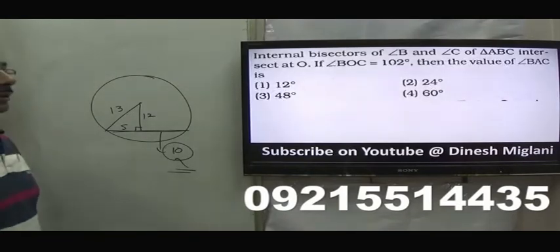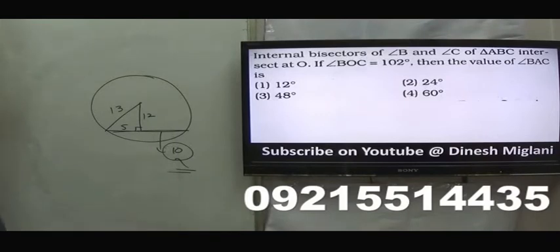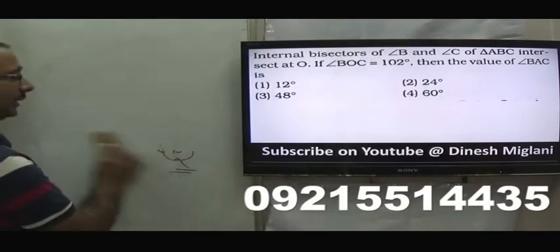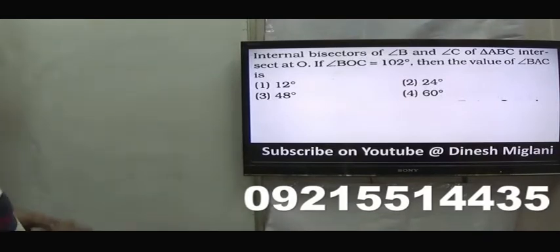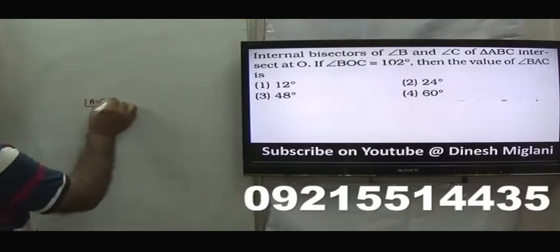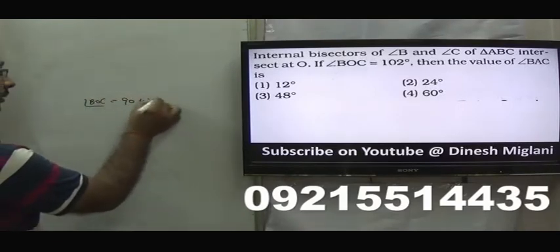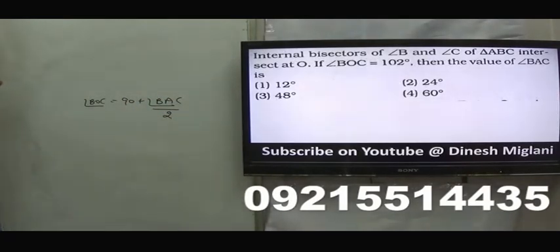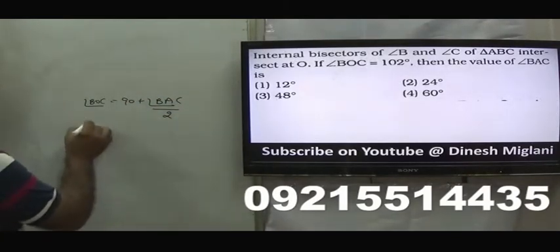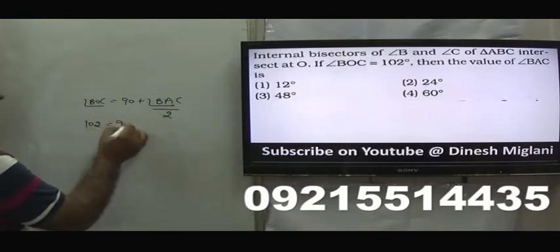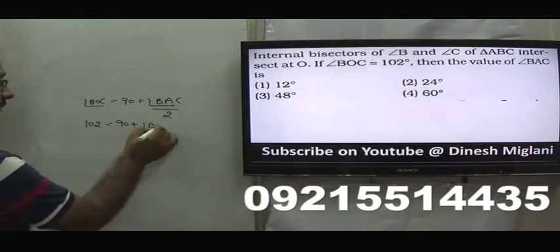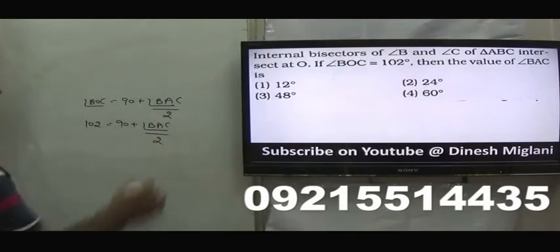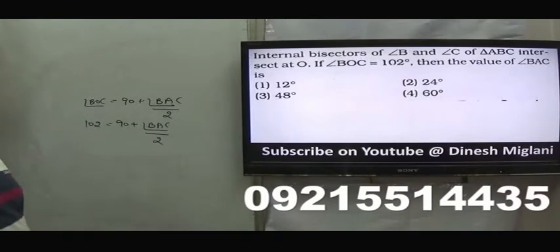Next question: internal bisectors of angles B and C of triangle ABC meet at O, and angle BOC = 102°. Find angle BAC. We know that angle BOC = 90° + (angle BAC)/2. So 102 = 90 + (angle BAC)/2, giving angle BAC = 24°. Hence the second option is my answer.